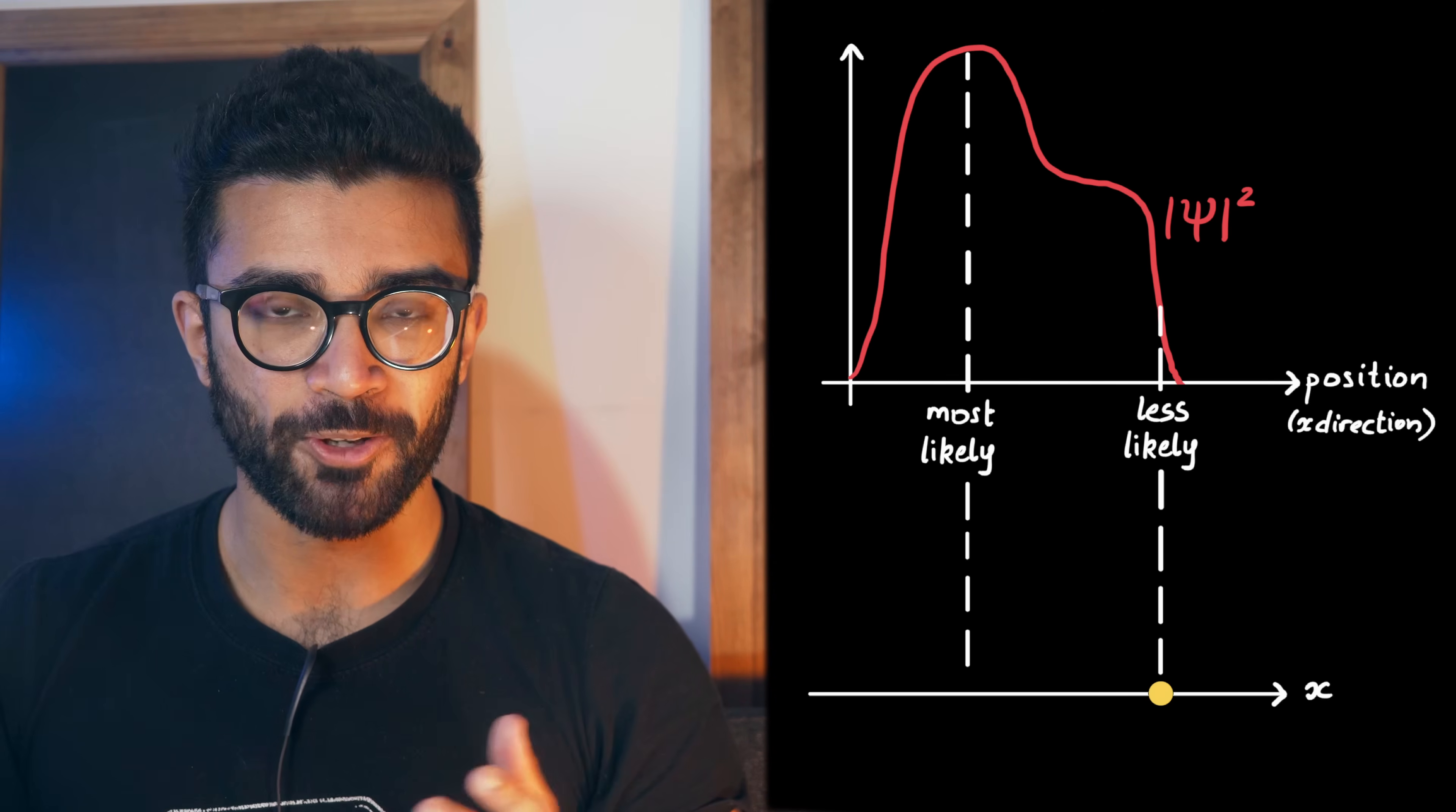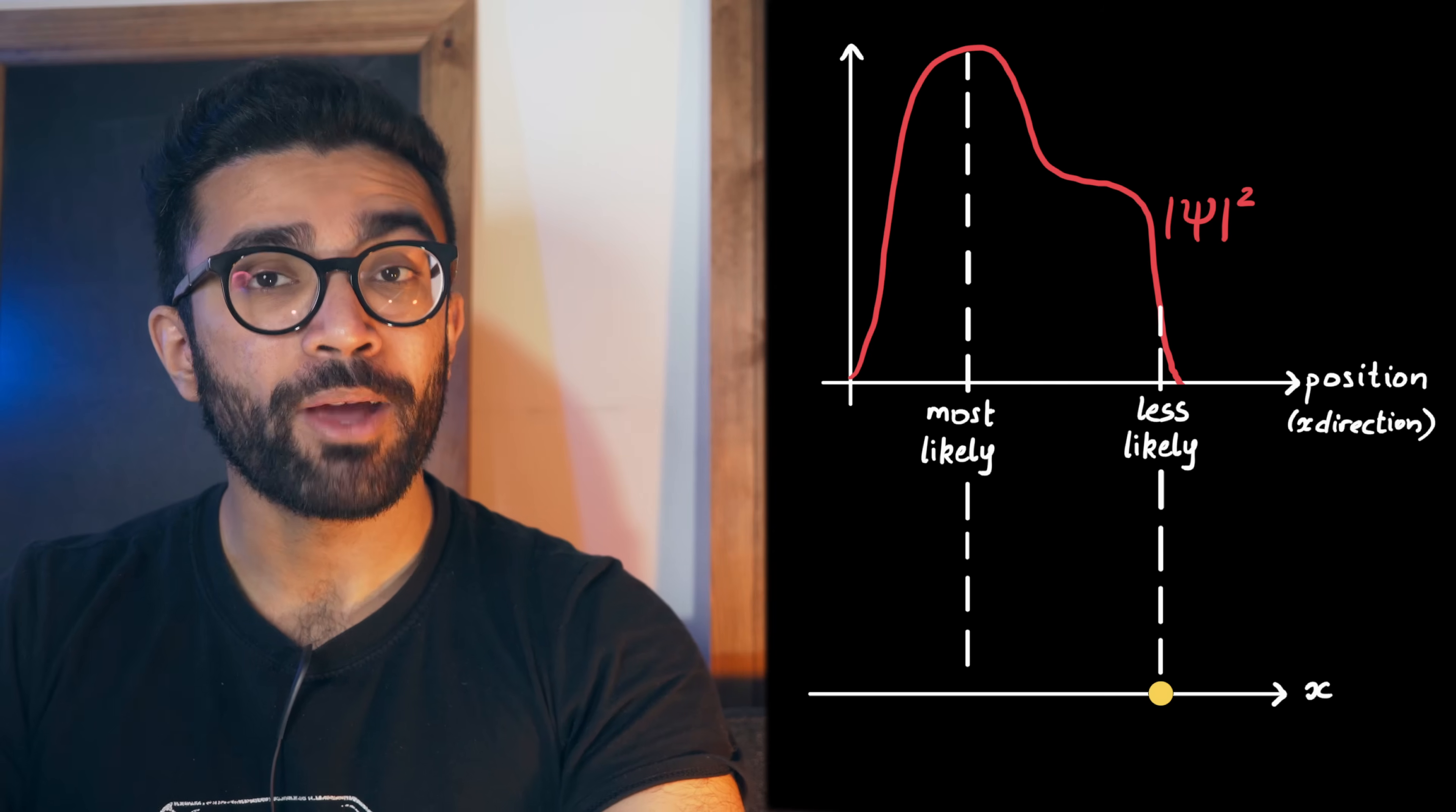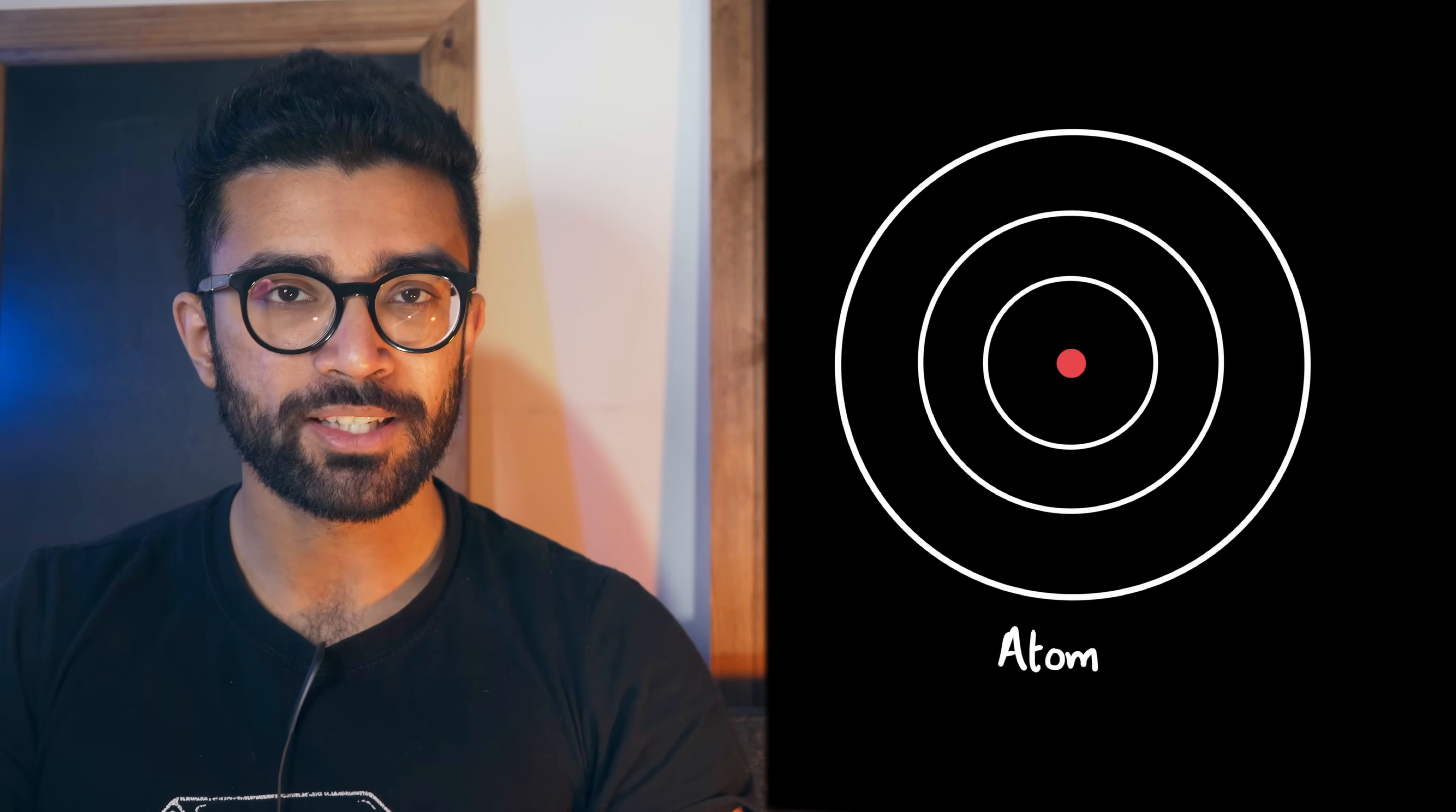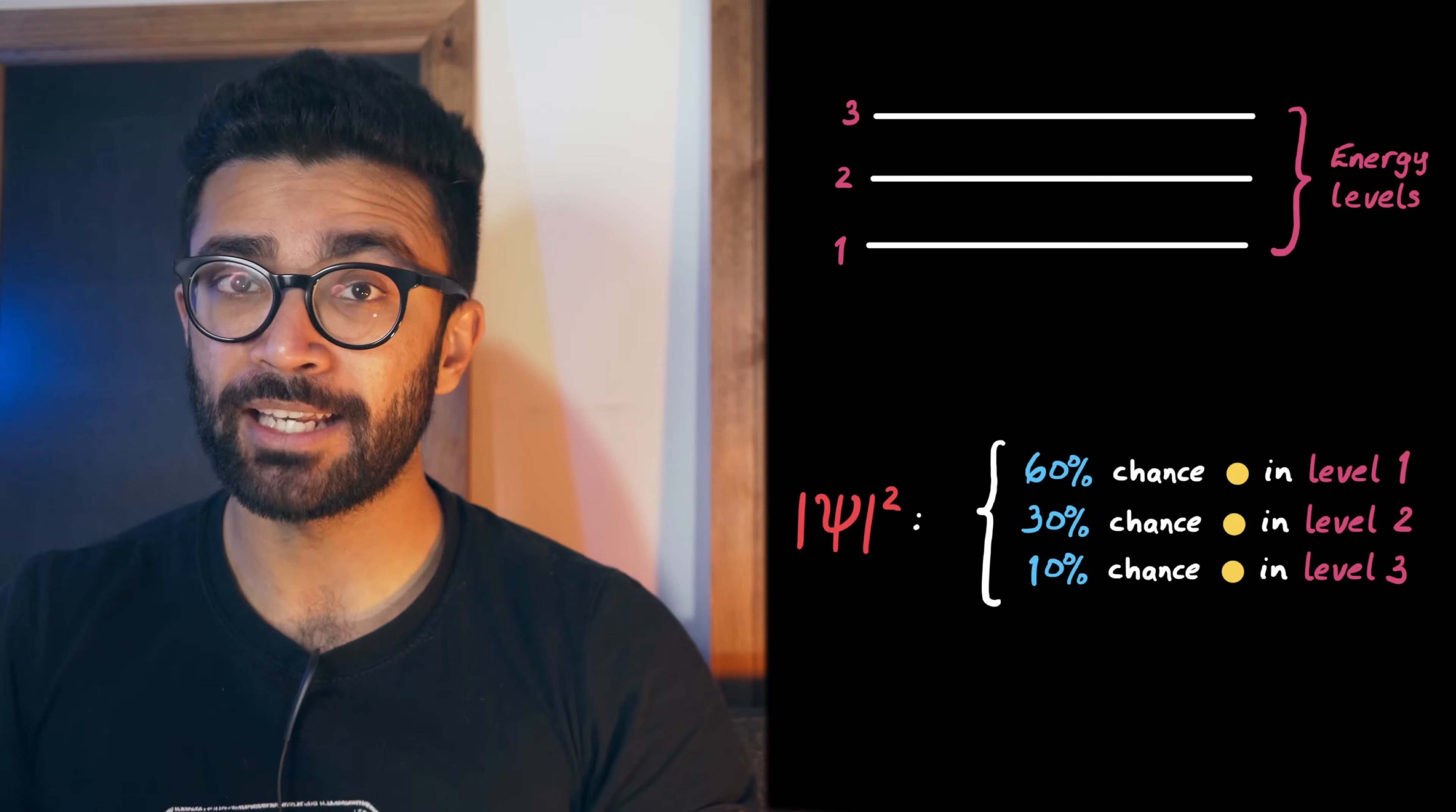But the wave function also contains other kinds of information. Basically, any measurement we can make, the wave function gives us the probabilities of getting any of the possible measurement results. For example, we may be familiar with the idea that in an atom, electrons can only occupy specific energy levels, or shells. With the nucleus at the center of the atom, the shell nearest to the nucleus, called the first shell, is lowest in energy. The next shell up has slightly more energy, and then some more, and so on and so forth. But in other systems that aren't necessarily simple atoms, we can also see energy levels like this. A particle can be found in one of many different energy states, and the wave function squared gives us the probability of finding the particle in any one of these.